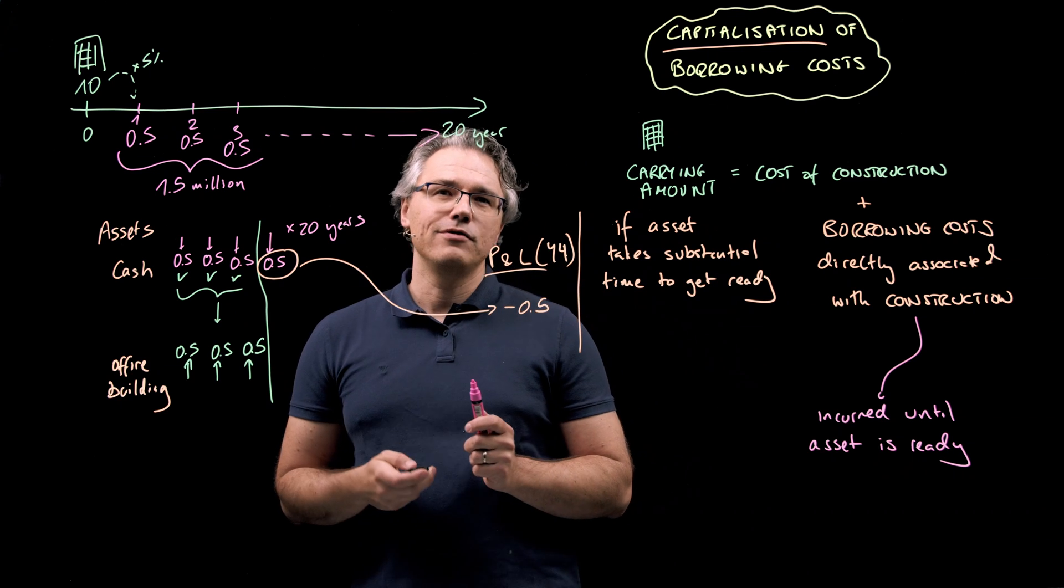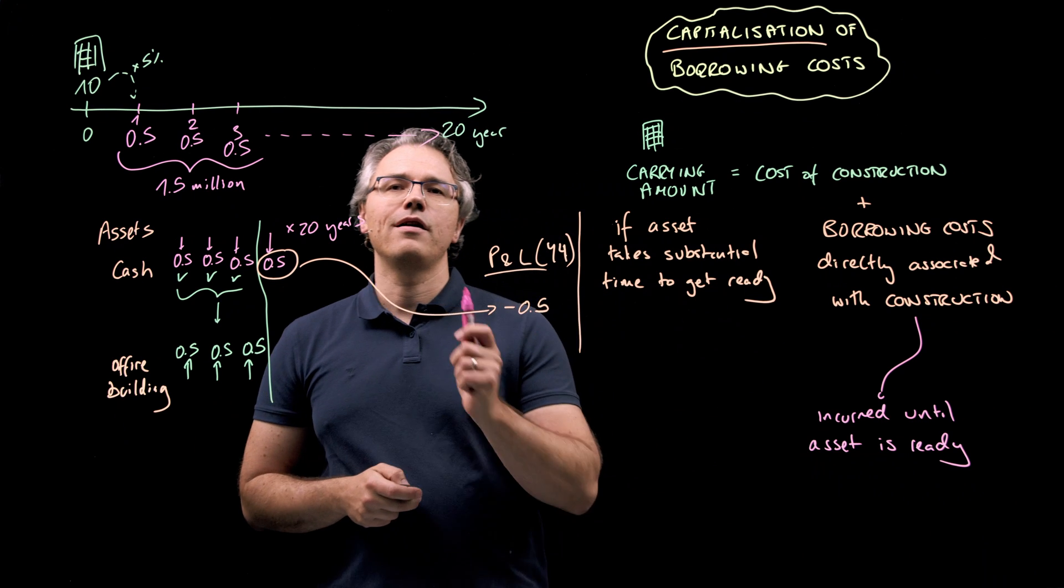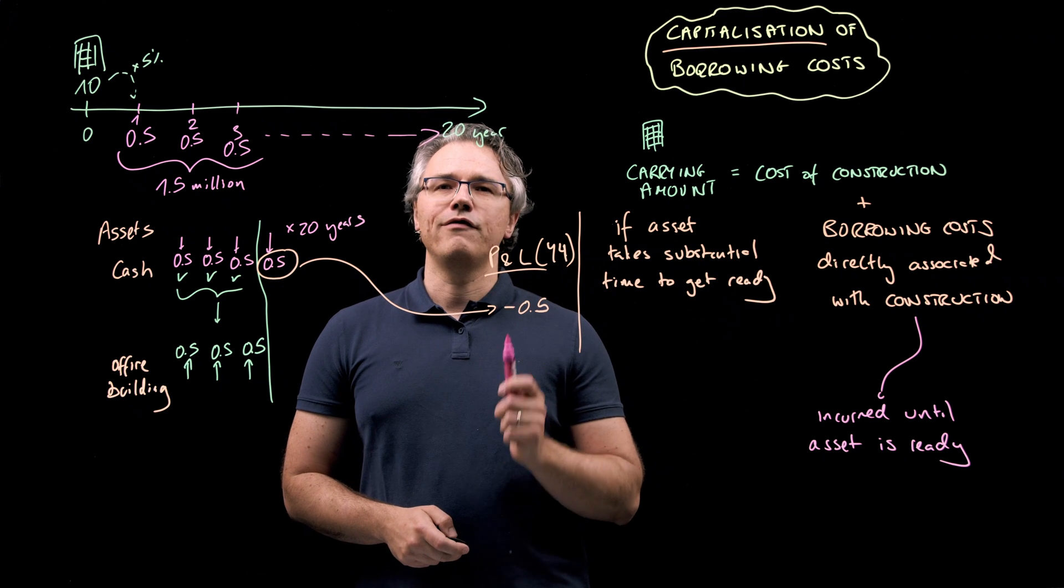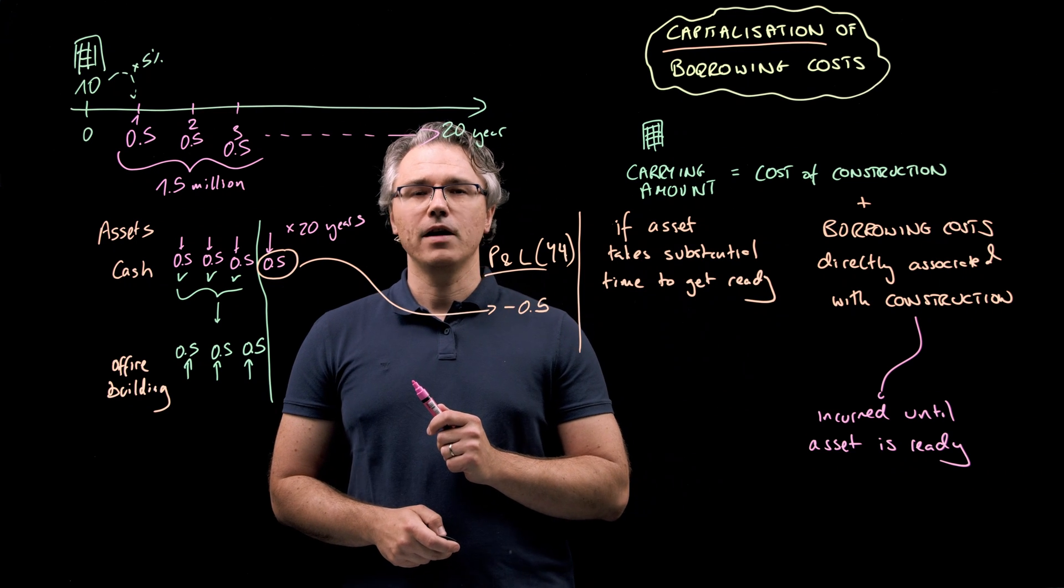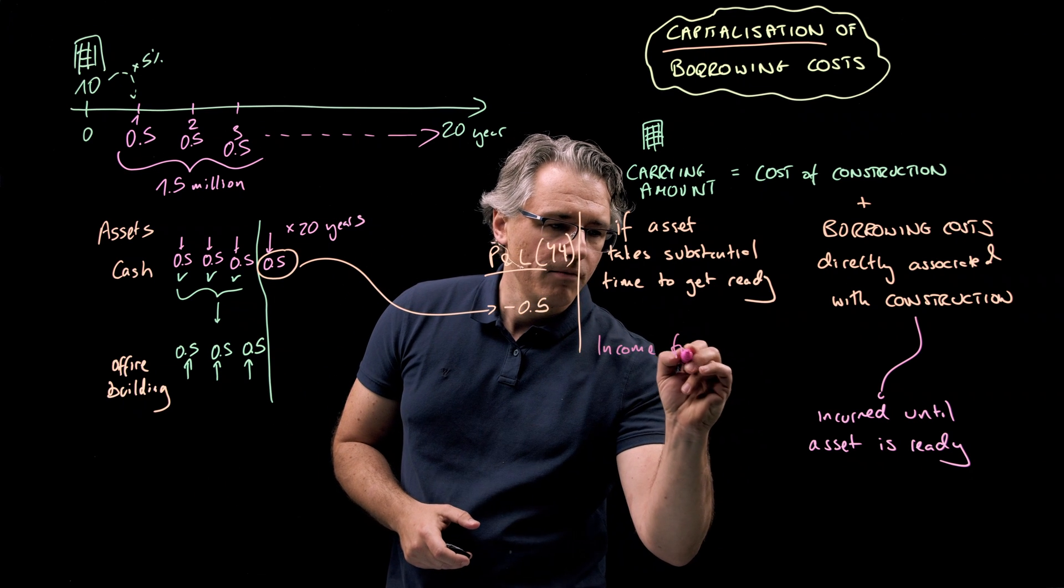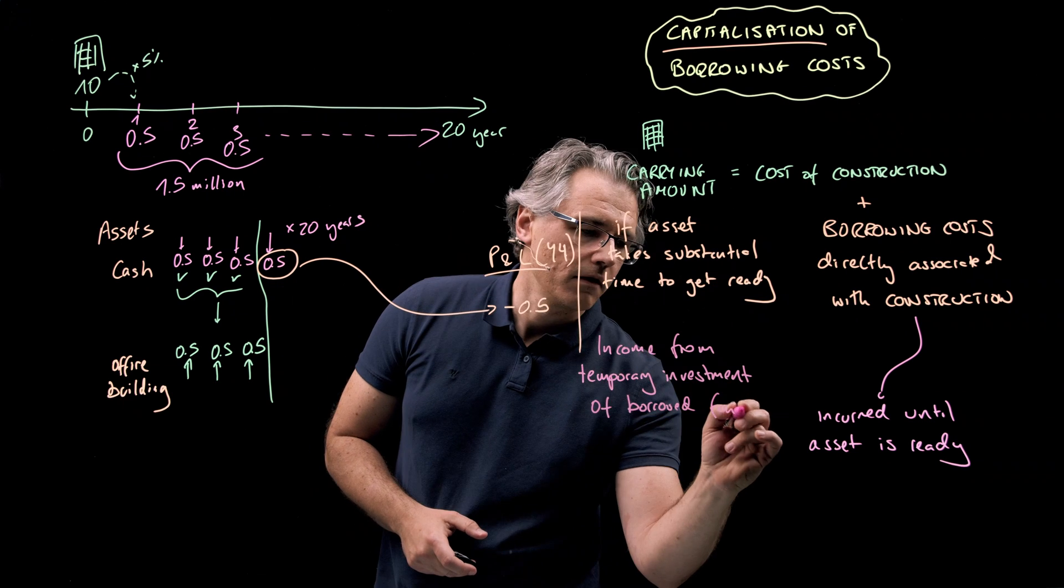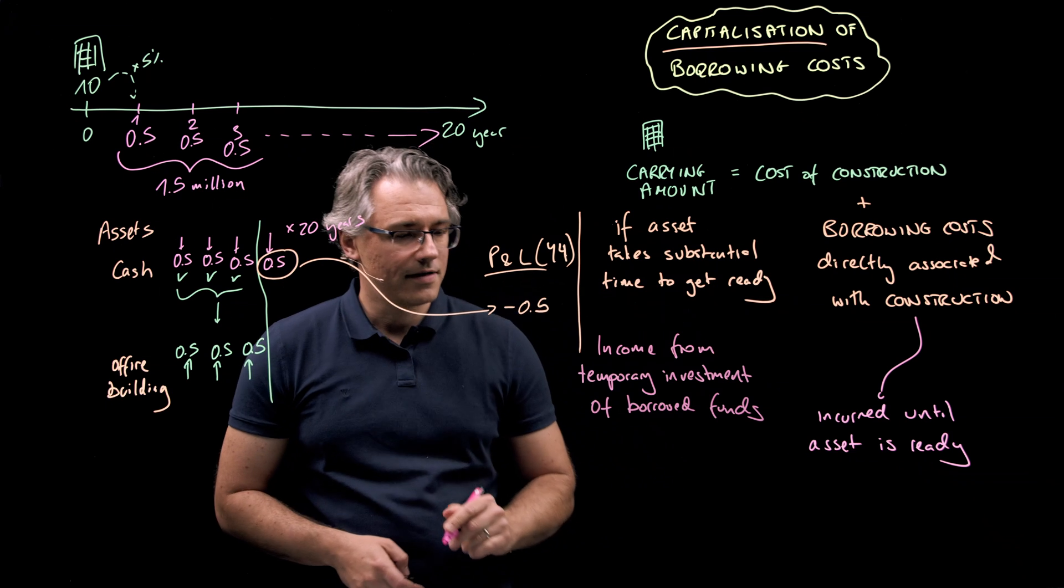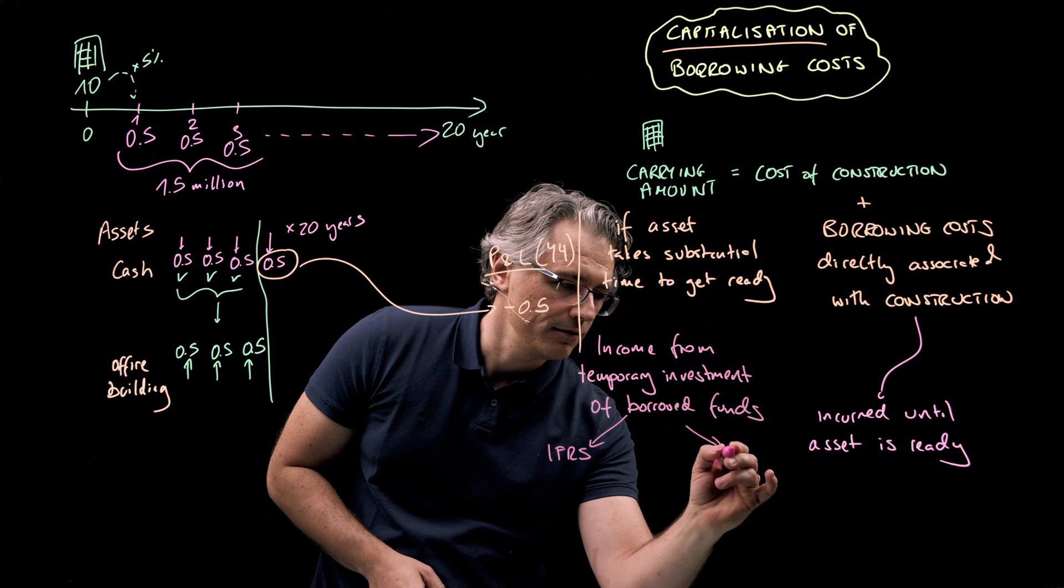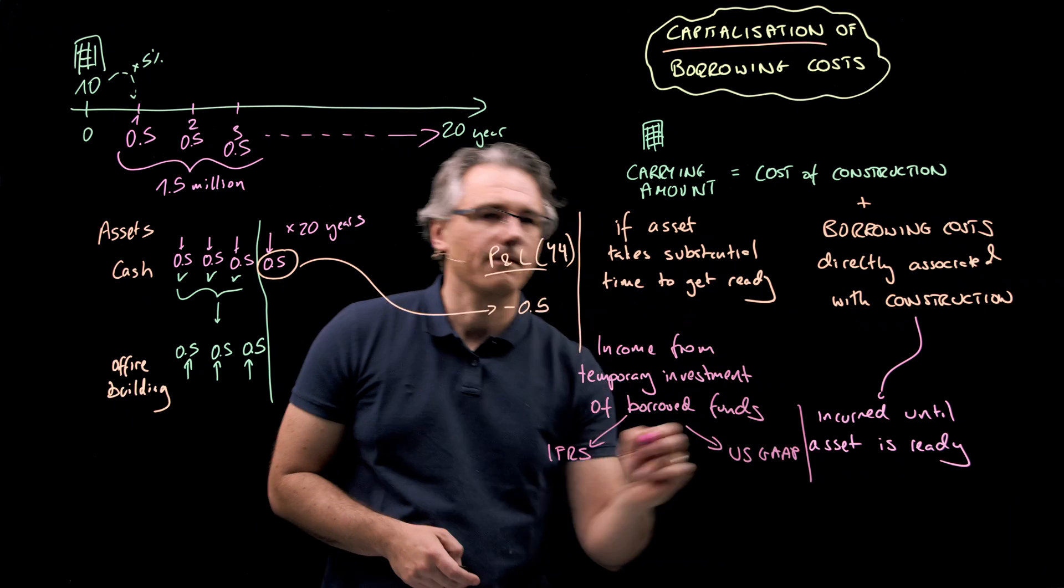Well, this is where you have to be extra careful to check whether the company is reporting under IFRS or US GAAP because the rules diverge in this respect. So let's write down income from temporary investment of borrowed funds. And let's have separate arrows for their treatment under IFRS and US GAAP.